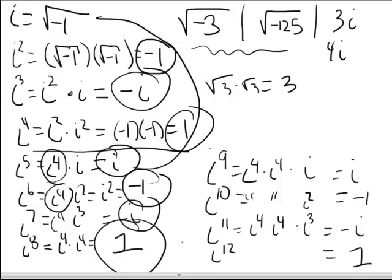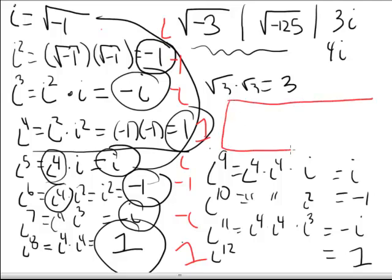So the pattern goes as follows: i, negative one, negative i, one — repeating every four. The rule is based on multiples of four. If I gave you i to the fifteenth, or a giant number like i to the 150, we should have a rule that tells us exactly what that equals. The rule is based on dividing by four and looking at the remainder. For example, five divided by four has a remainder of one; six gives remainder two; seven gives remainder three; eight gives remainder zero.